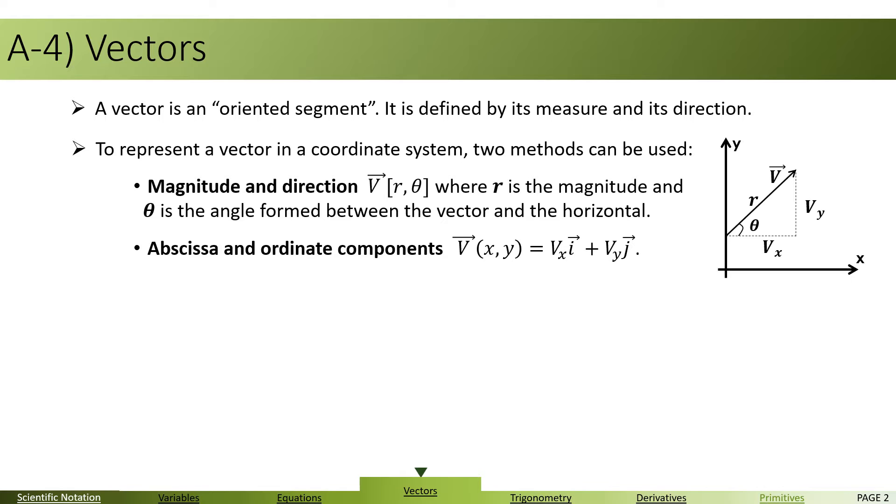Look at the figure here aside. You notice that when you write a vector using abscissa and ordinate vector components, you can always relate Vx and Vy to R and theta. How is that? Let's check this out.